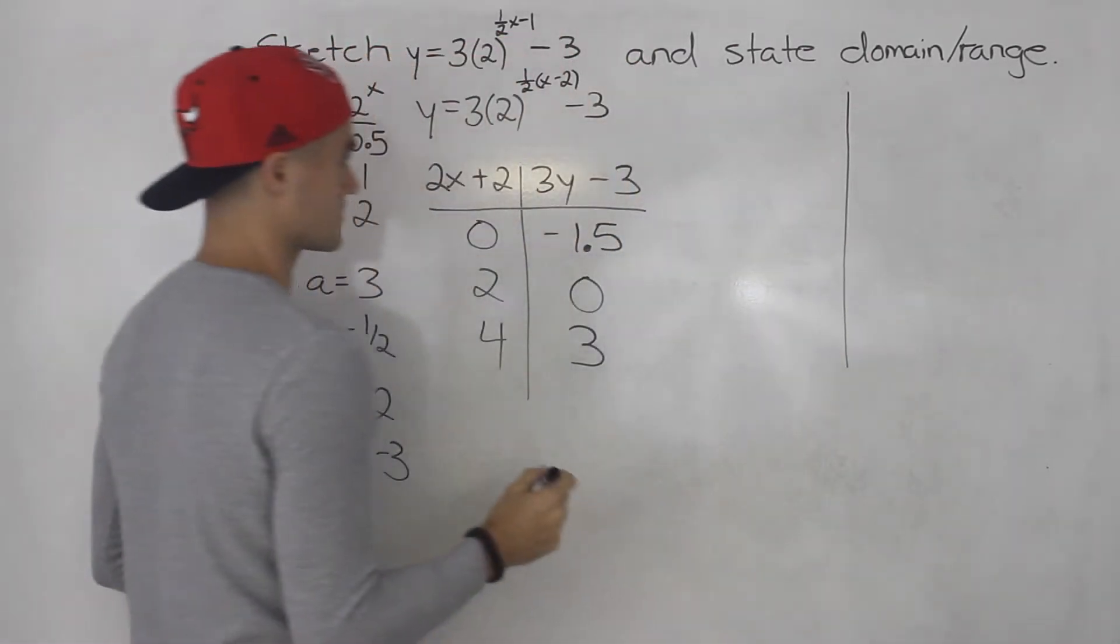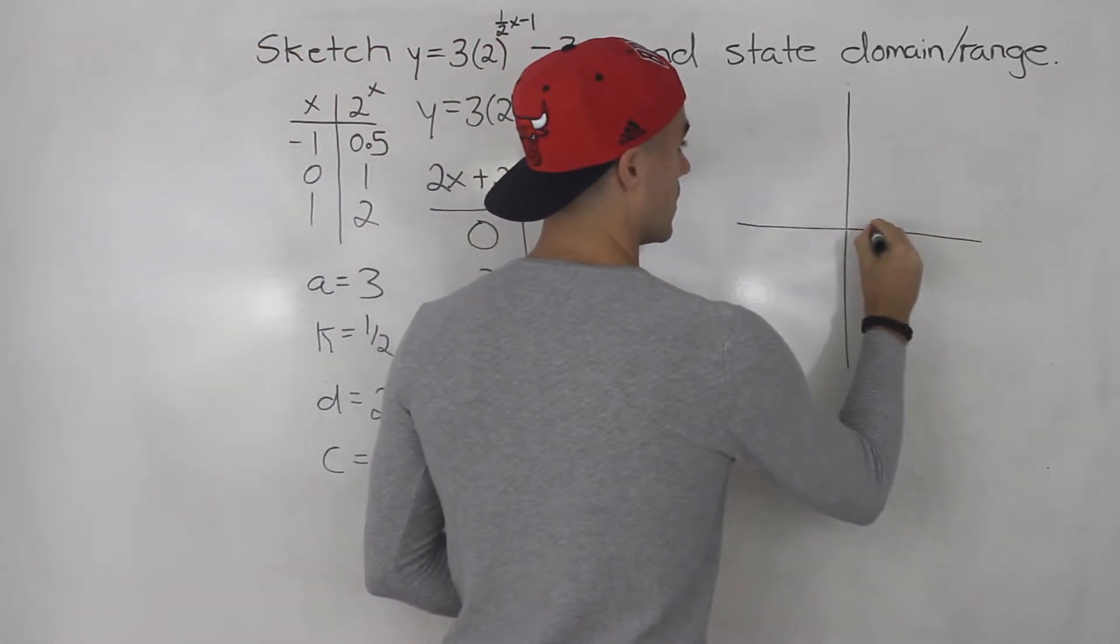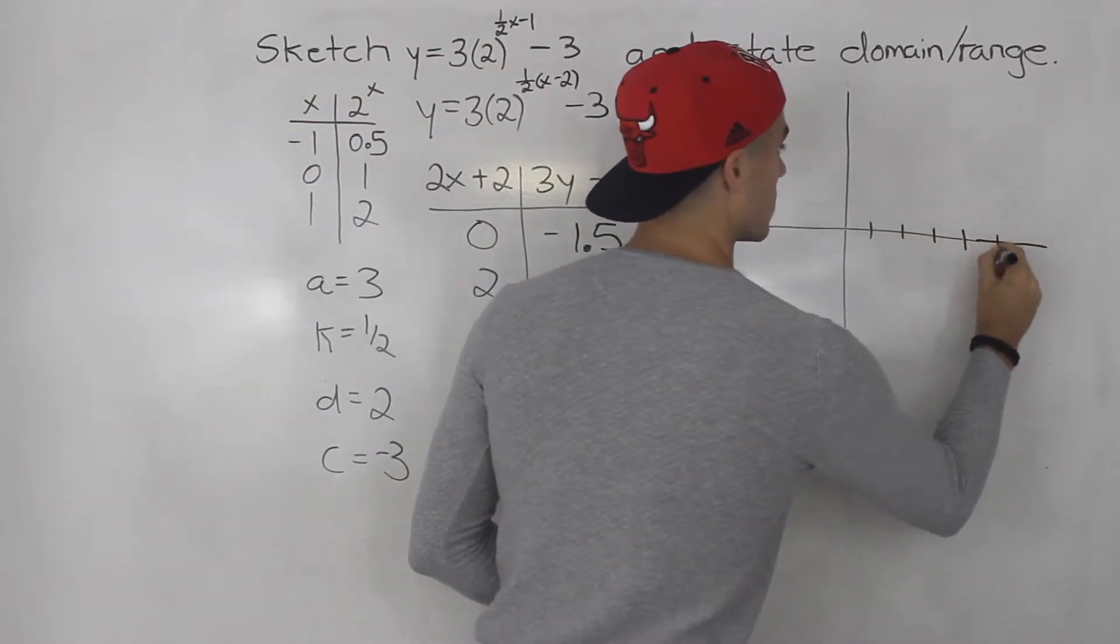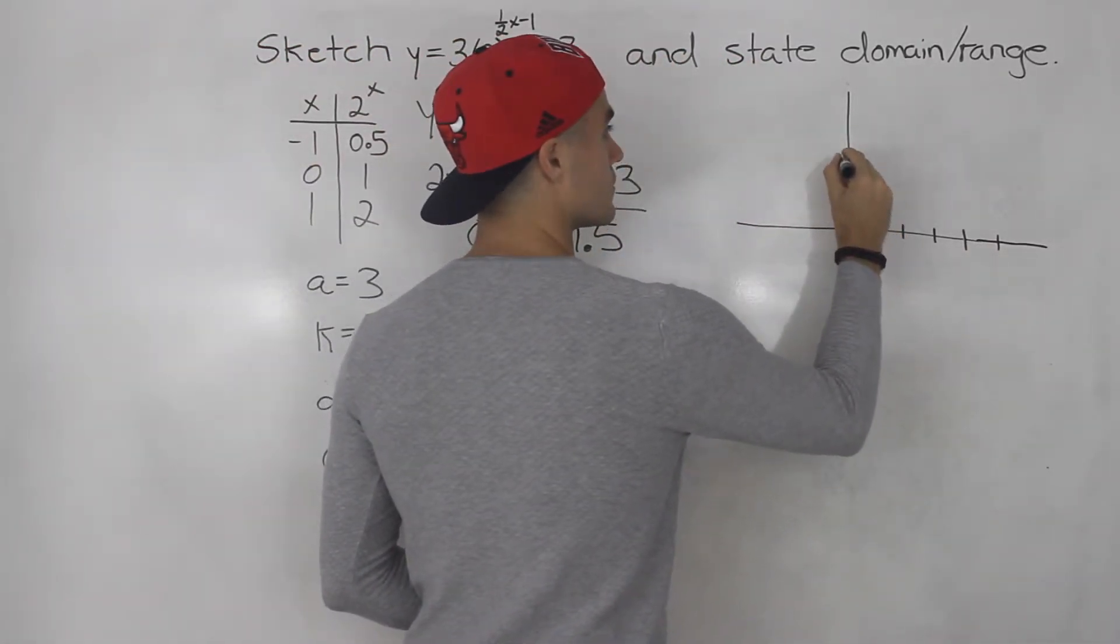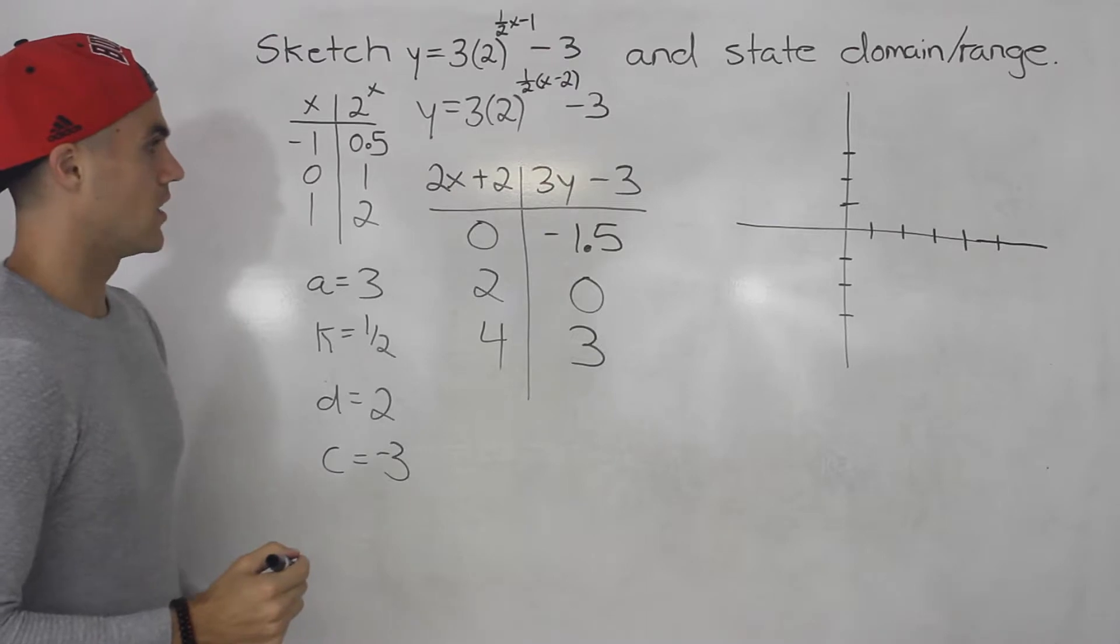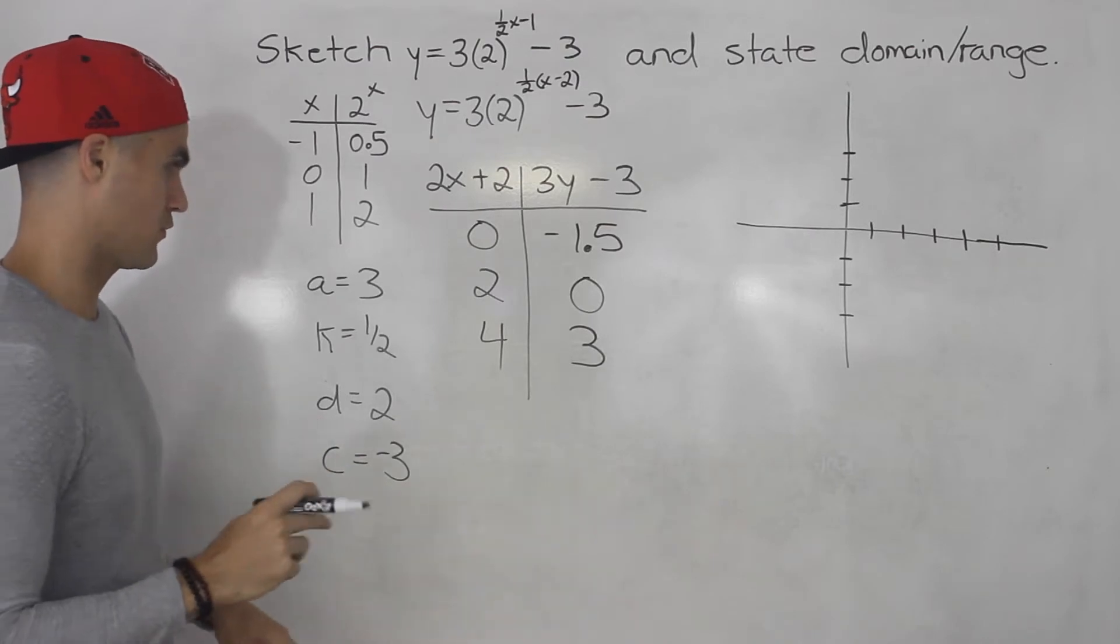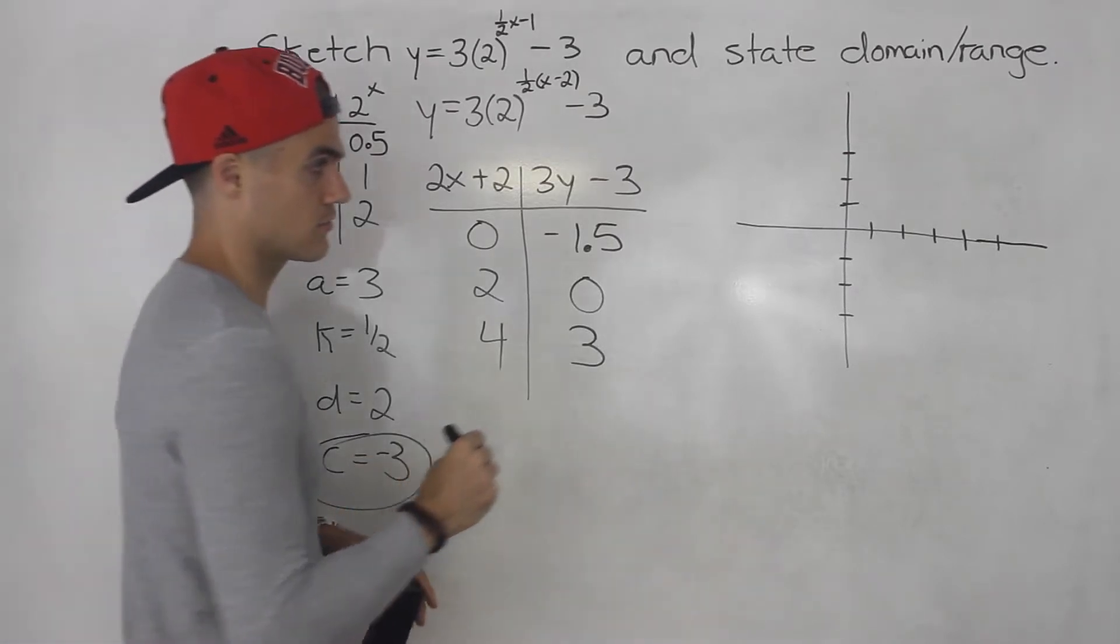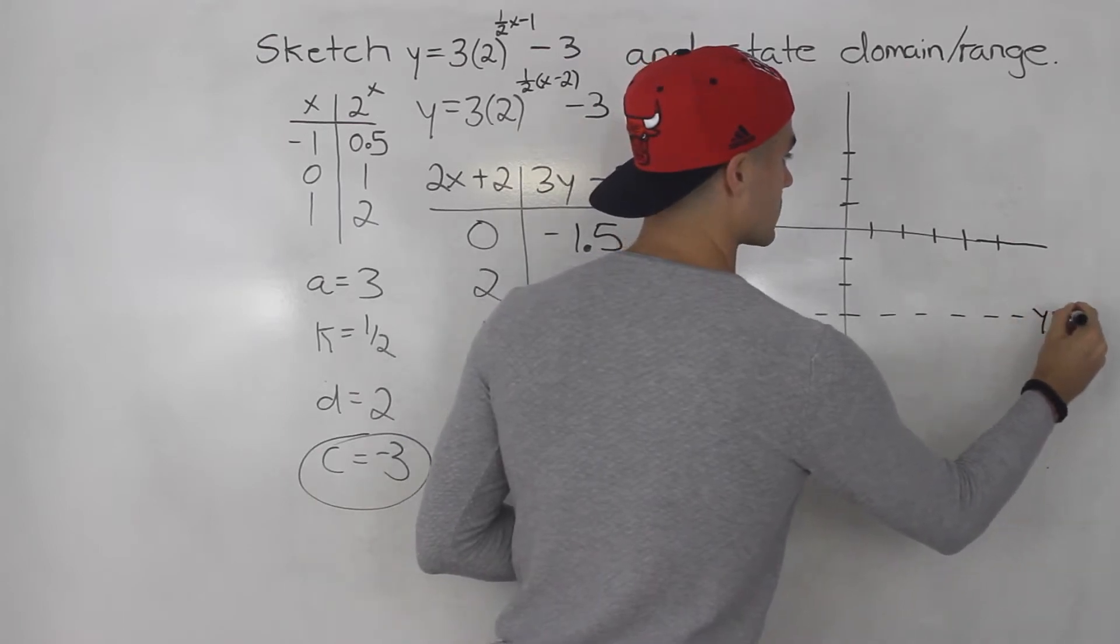Let's graph them. So the y values is a mix of positive and negative and then all the x values are positive. So 1, 2, 3, 4. Let's actually extend this a little bit more. 5. And then let's do 1, 2, 3. 1, 2, 3. Like that. Okay. So 0, negative 1.5. Actually, sorry. Before we plot the points, I want to plot the horizontal asymptote. So c value negative 3. That is down here. So y equals negative 3.